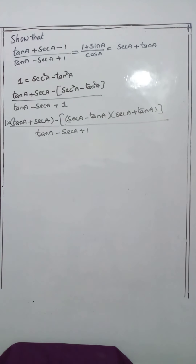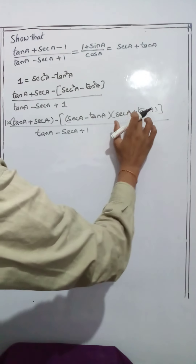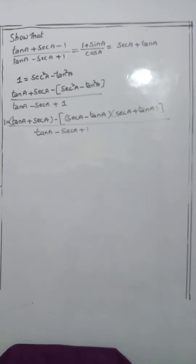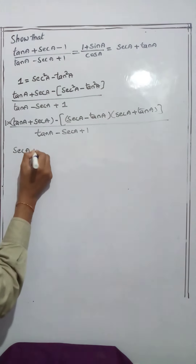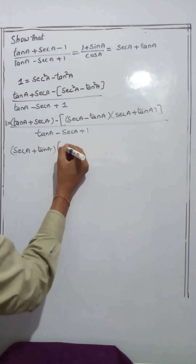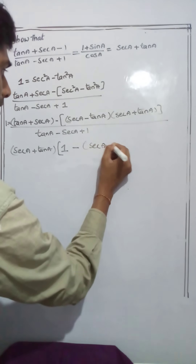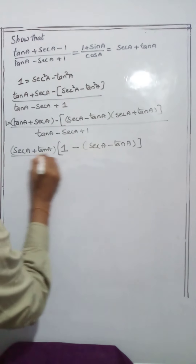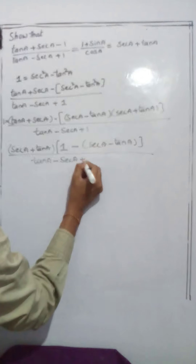For understanding, note that tan a + sec a and sec a + tan a are the same by the commutative property of addition. Therefore, take sec a + tan a as a common factor. The coefficient of sec a + tan a is 1, and the other coefficient is sec a - tan a, giving denominator tan a - sec a + 1.